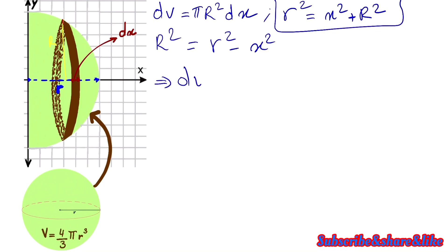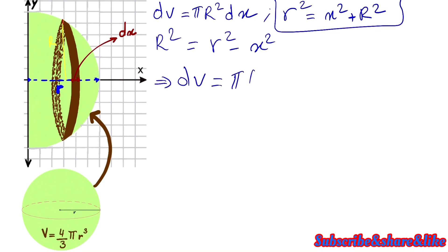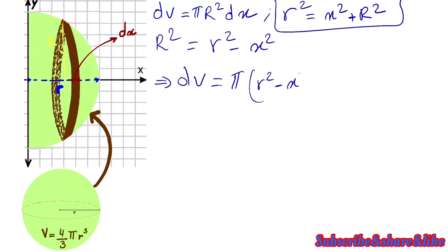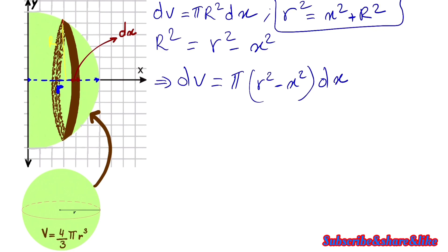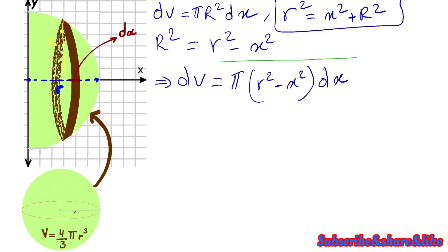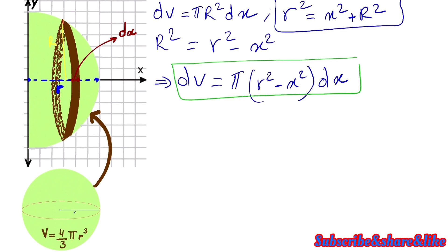Substituting back, dV is just π times (R² minus x²) dx. This is the formula for the tiny volume of this small cylinder.